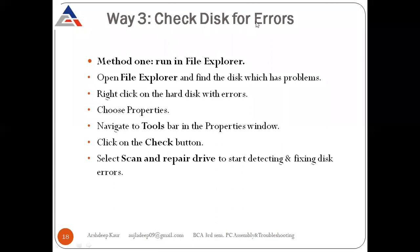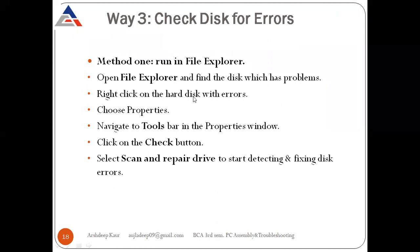Way three: check the disk for errors. Method one is to run it in File Explorer. Open File Explorer and find the disk creating the problem. Right-click on the hard disk with errors, go to Properties, navigate to the Tools tab, then click the Check button. Select 'Scan and repair drive' to start detecting and fixing disk errors.